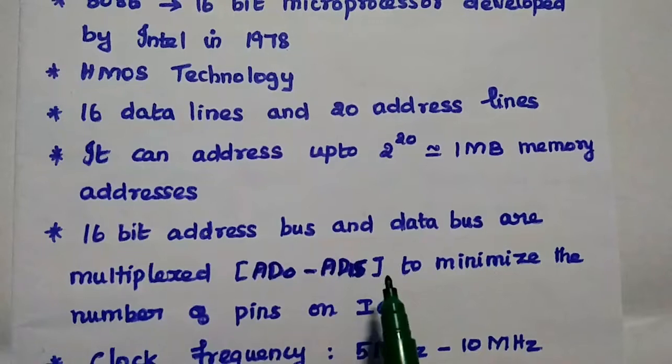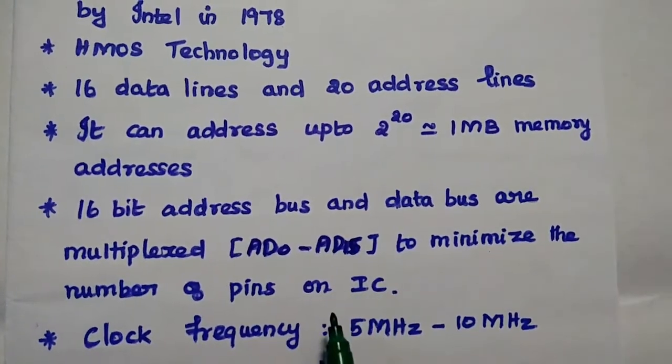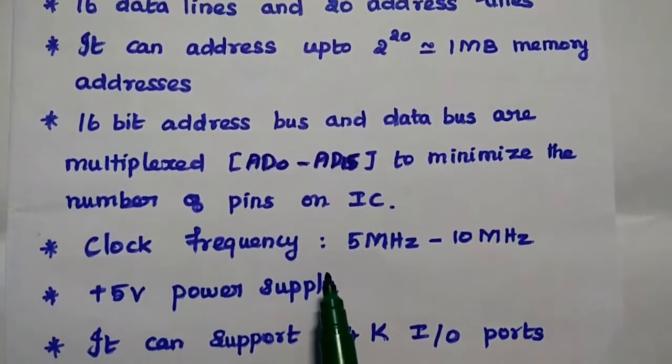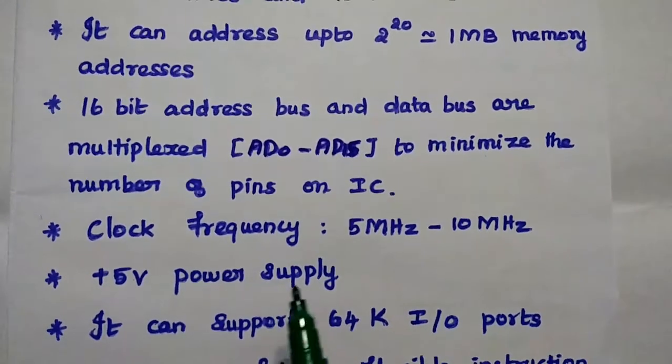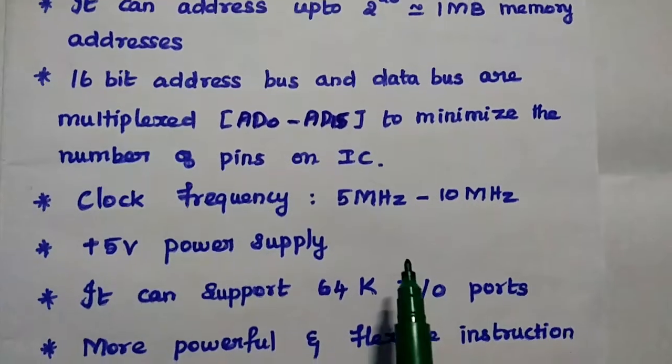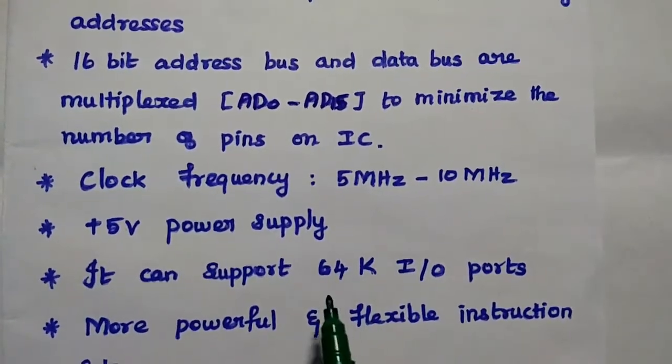16-bit address lines and data lines are multiplexed together to minimize the number of pins used in integrated chips. The clock frequency is 5 MHz to 10 MHz range. It requires plus 5V power supply.